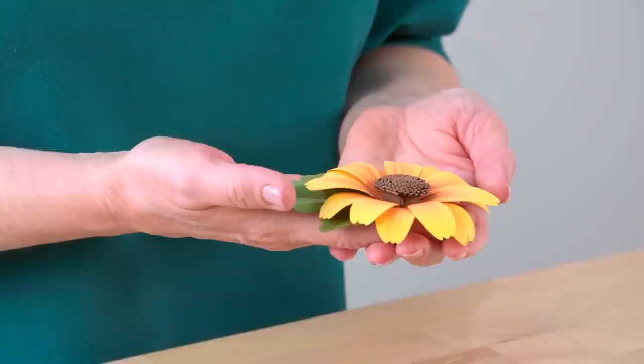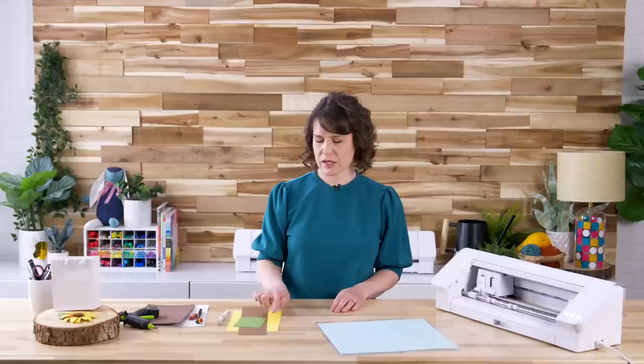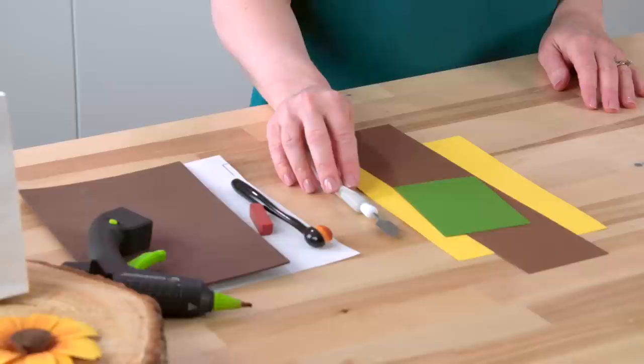Let's go ahead and go over the supplies. For supplies and tools today, we will be using the Cameo 4 and the cutting mat, and we need some medium-weight cardstock in yellow, brown, and green. Then we'll also be using the Silhouette spatula tool.